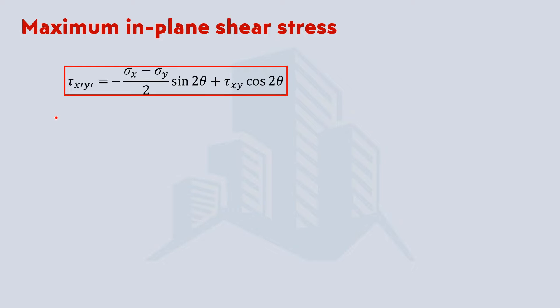In previous videos, if you recall, we had the formula to calculate the shear stress in any x-y plane. Now since we want to find the plane on which we are going to have the maximum shear stress, that can be done if we differentiate this formula with respect to theta and then equate it equal to zero. Then we are going to have the plane on which we are having the maximum shear stress.